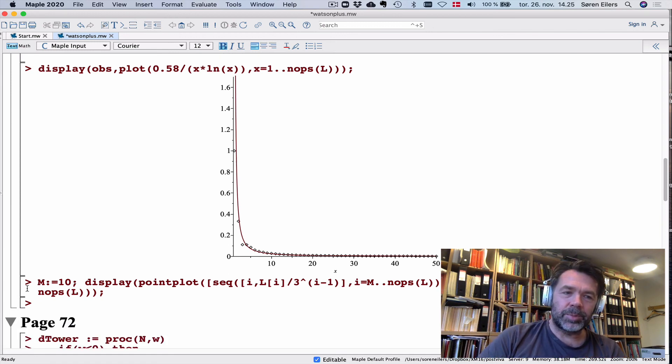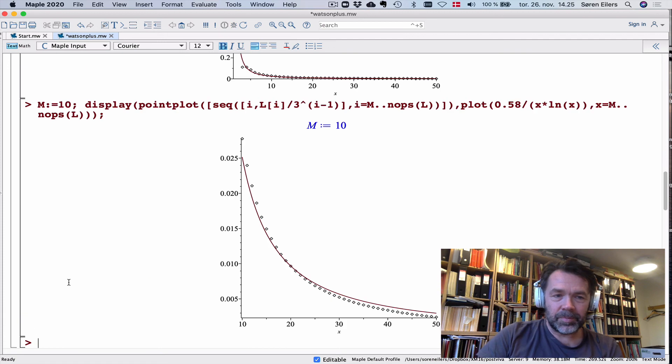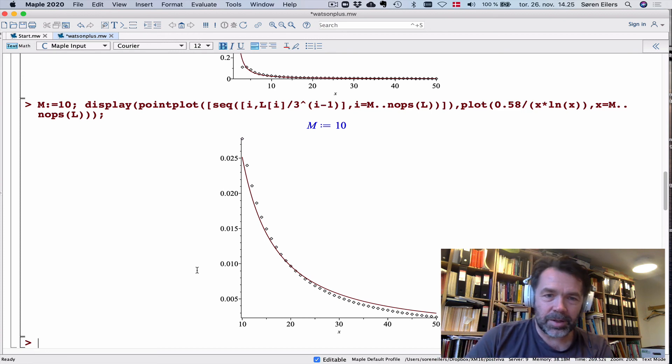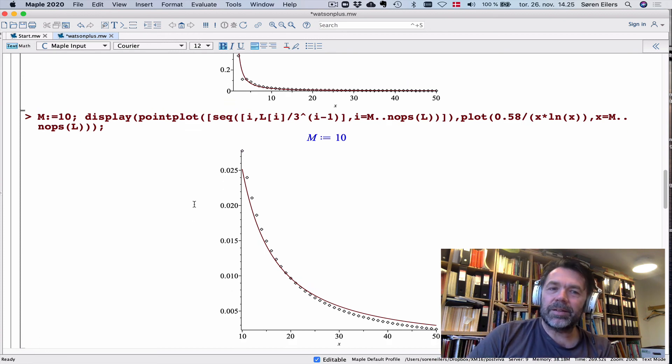What I'll do now is put in a value m for a beginning value. I chose it to be 10. Now I will make a plot where I discarded the first 10 entries, first nine entries of the plot. You can see now that it's a little bit less clear that Watson had a good conjecture.